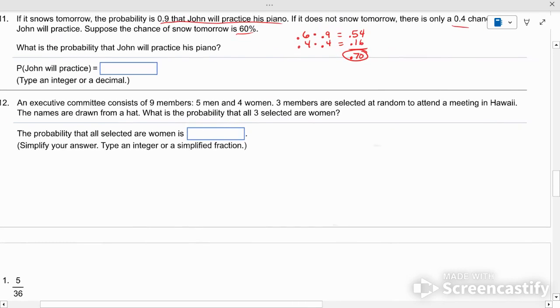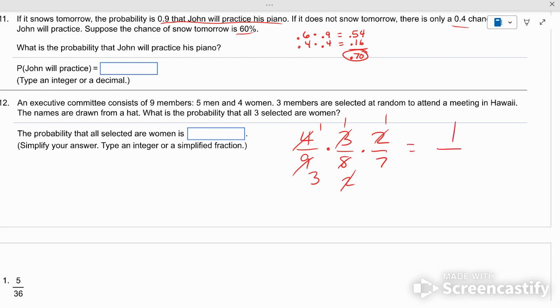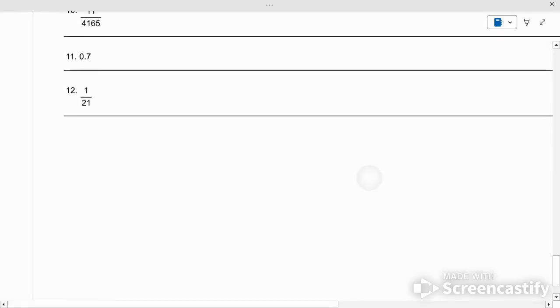Last one. An executive committee consists of nine members, five men, four women. If three are selected at random to go to Hawaii and the names are drawn from a hat, what's the probability that all three are women? So, you've got a four out of nine chance for the first one. What's the second one going to be? Three out of eight. Third one, two out of seven. Three and nine cancel to be one and three. Four and eight cancel to be one and two. Two and two cancel to be one. So, it's one out of a 21 shot that all three of them are women. One out of 21.